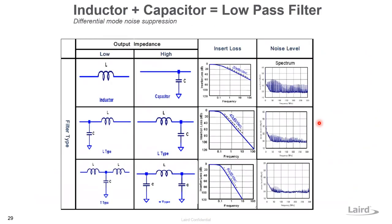An inductor and capacitor combination can form a low-pass filter to suppress differential mode noise. As more inductors and capacitors are added — more stages of the filter — there is more attenuation and a steeper curve. Inductors are also a very important component for EMC.